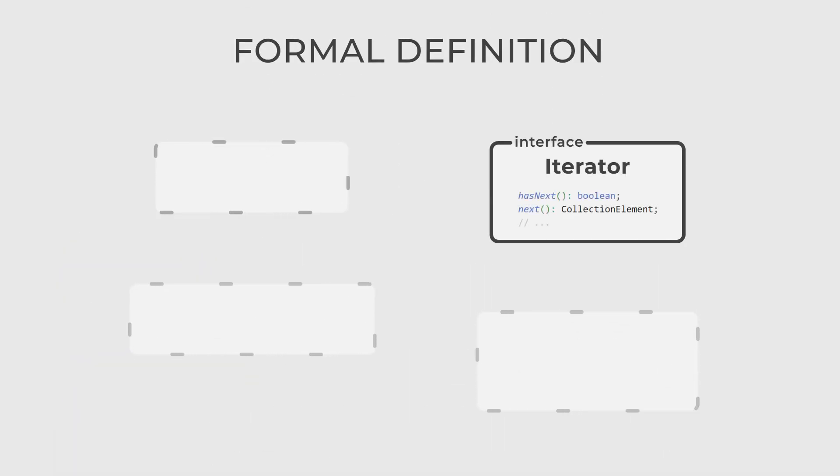There are four actors in this pattern. The first one, iterator, is an interface that defines the methods for traversing a collection, including operations like next and hasNext.